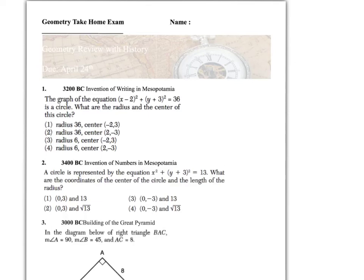Starting with the first question — in 3200 B.C., the invention of writing occurred in Mesopotamia. The circle questions are very important to be good at on the exam; New York State loves to put them on. You get the center from these two numbers here. Remember, it's not simply just taking the numbers and writing them — you have to do something with the numbers. And this number at the end of the equation can give you your radius. Again, you don't just take the number; you have to change it somehow.